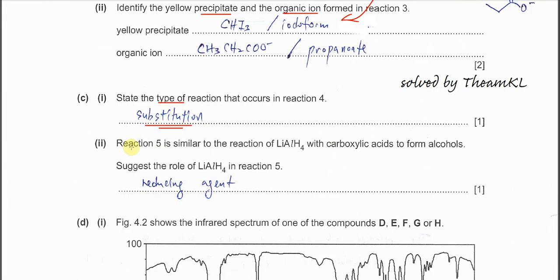Part 2, reaction 5 is similar to the reaction of lithium aluminum hydride with carboxylic acid to form alcohol. Suggest the role of lithium aluminum hydride. Very easy. This one is always reducing agent.